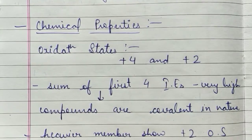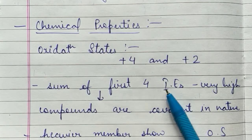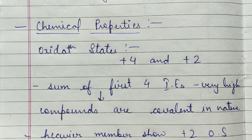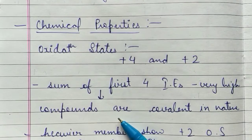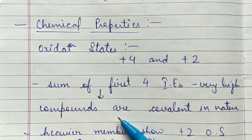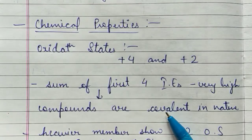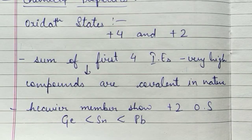The sum of the first four ionization energies is very high, so losing four electrons is not feasible. It is better to share four electrons rather than remove or gain them. So sharing of 4 electrons occurs, completing the octet. This means the compounds of carbon family members are mainly covalent in nature.